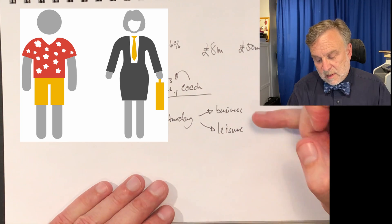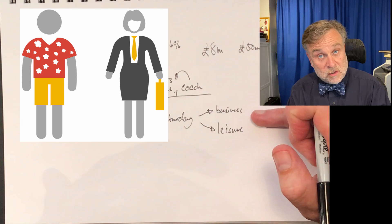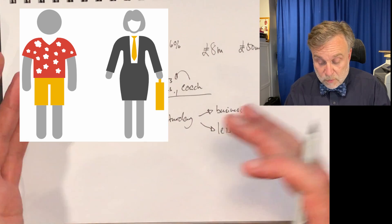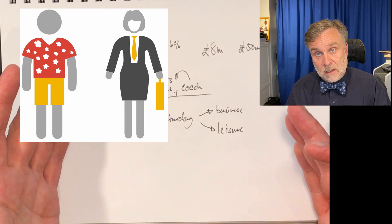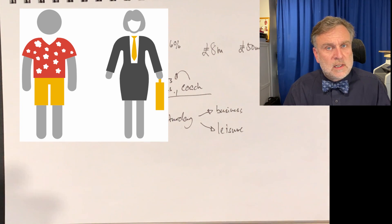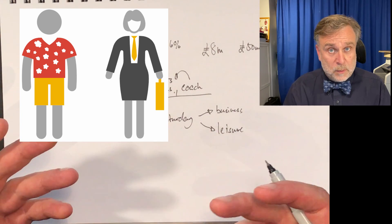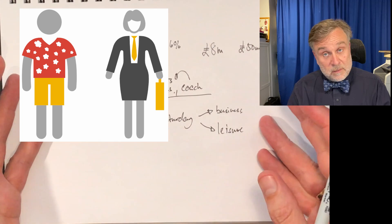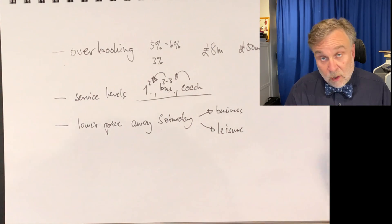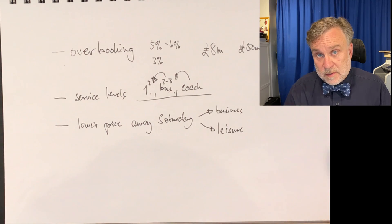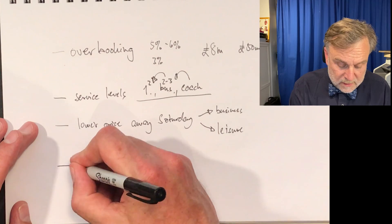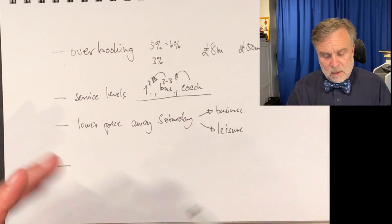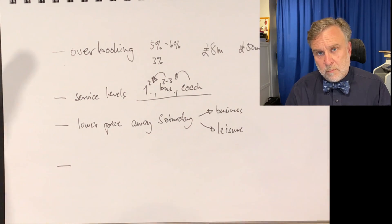We say about business people that they are time poor and cash rich, and for leisure travelers that they are time rich and cash poor. So if you can stay away on Saturday, if you are traveling for leisure, that's what you want to do anyway. If you're a business person, you want to get back home to your family on Saturday. And it's a fairly effective way of separating the two just by having that pricing scheme. There are other ways you can do pricing. You can price based on where people are coming from.